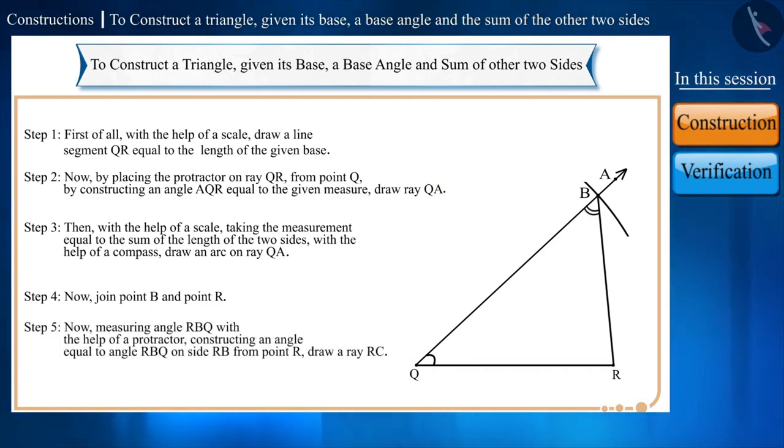Step 5: Now, measuring angle RBQ with the help of a protractor, constructing an angle equal to angle RBQ on side RB from point R, draw a ray RC. Then, name the point of intersection of side QA and side RC as point P.